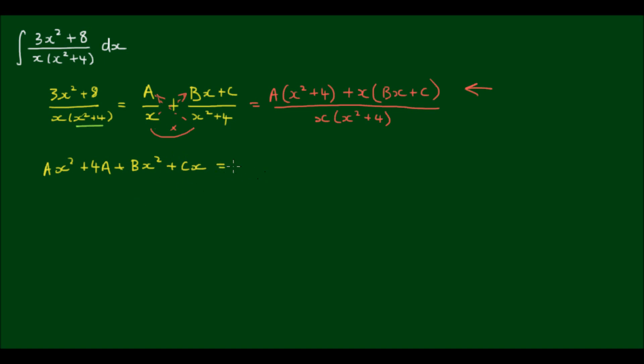And then simplifying, I get (A + B)x² + Cx + 4A. And this is equal to the original numerator of 3x² + 8.